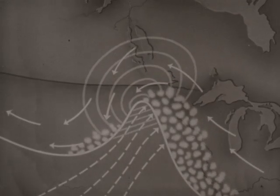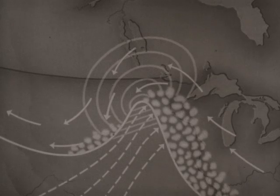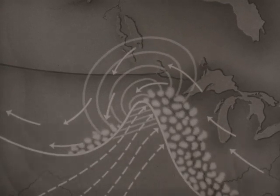Still farther in advance of the front, there will be high, thin, whitish veils called cirrus or cirrostratus.